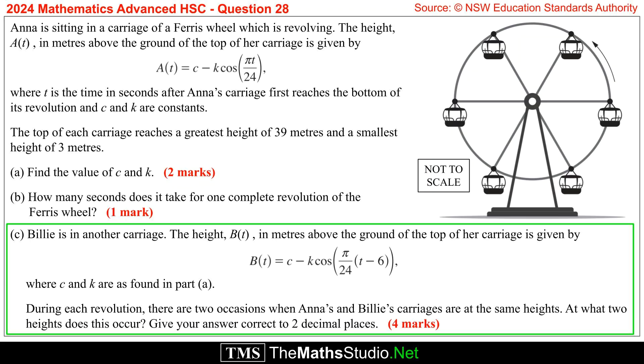Part C: Billie is in another carriage. The height B(t) in metres above the ground of the top of her carriage is given by B(t) equals c minus k times cos(π/24 times (t - 6)) where c and k are as found in part A. During each revolution there are two occasions when Anna's and Billie's carriages are at the same heights. At what two heights does this occur? Give your answer correct to two decimal places.